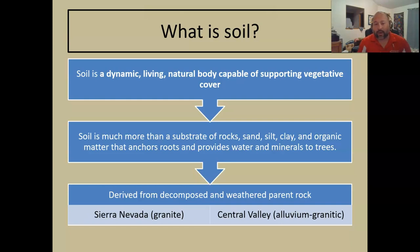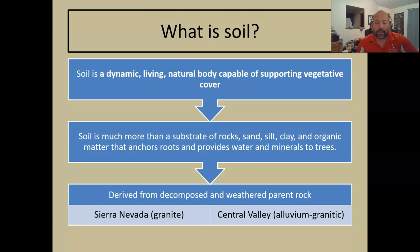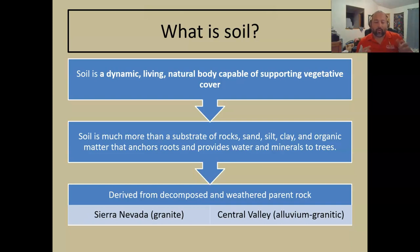Where does our soil come from? It's derived from decomposed and weathered parent material. Here specifically, that parent material is granite from the Sierra Nevada Mountains. Down here in Bakersfield, it's alluvium brought down through the Kern River from the Sierras — a mix of granitic and probably some sedimentary rock — that washed out into the Kern River floodplain, which is basically now Bakersfield.